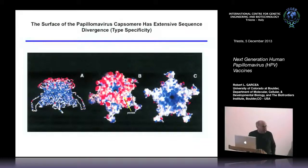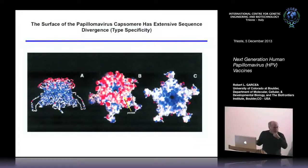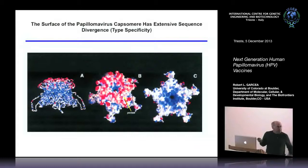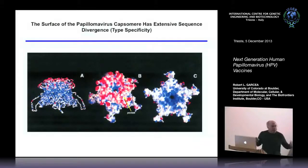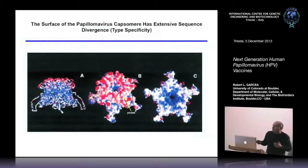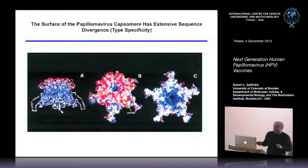Another interesting finding from structural studies: if you heat-map the pentamer for amino acid changes across about 50 different types, the red color shows variability among types and blue/white shows conserved sequences. The atomic structure shows us that all the variability between types is on the surface of the virus. For the rest of the virus pentamer, everything's conserved. So of all 150 or so different human types, all the sequence variability is on the surface and everything else is the same.